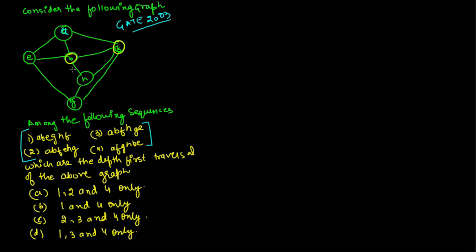We also have vertices G and H. The first sequence is A, B, E, G, H, and F. We have to determine whether this sequence is a valid DFS traversal or not.